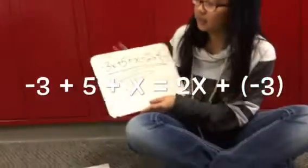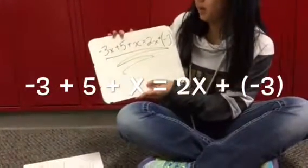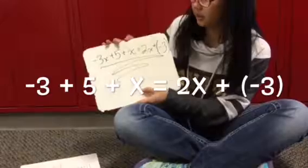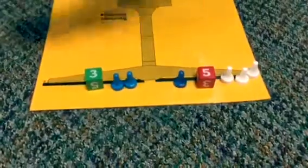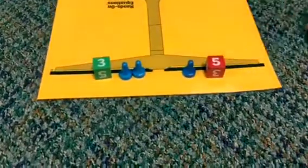The last problem we are doing is negative 3x plus 5 plus x equals 2x plus negative 3. The next thing we are going to do is add 3 blues. Cancel this one out.